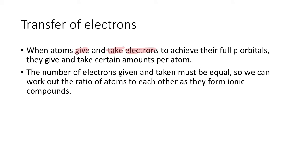They give and take certain amounts per atom. So one might give three, the other one might take two. But the most important thing to understand is that the number of electrons given and taken must be equal.